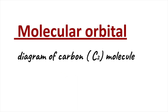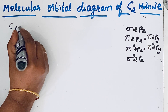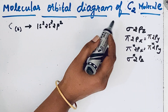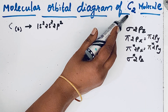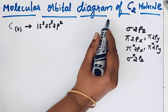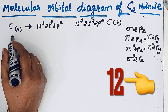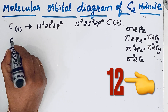Welcome to Aurora Chemistry for Everyone. In this video we are going to see how to draw the molecular orbital diagram of the carbon molecule. Carbon has atomic number 6, so we can write its electronic configuration. Since there are two carbon atoms in the carbon molecule, we need to account for both.